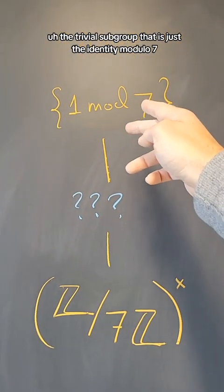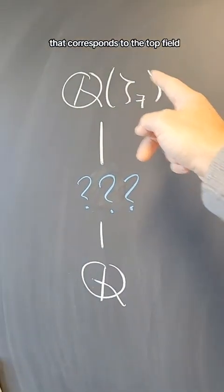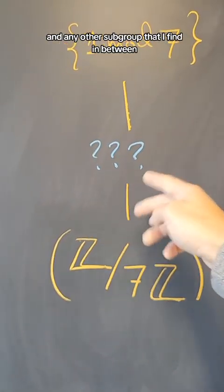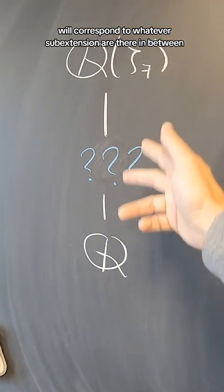The trivial subgroup, just the identity modulo 7, corresponds to the top field. And any other subgroup in between will correspond to whatever sub-extensions are there in between.